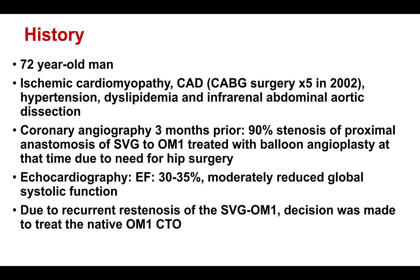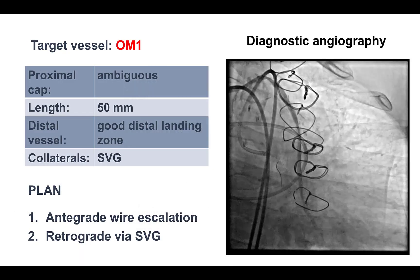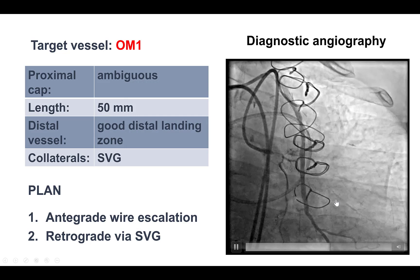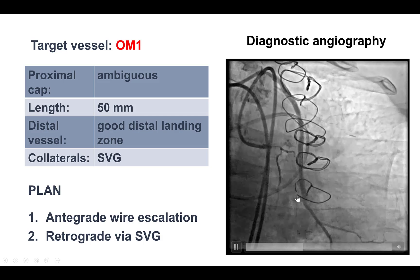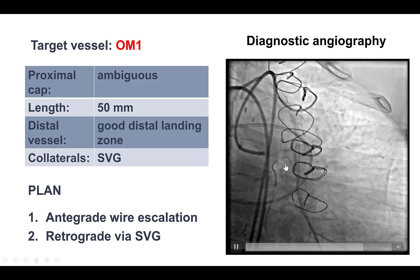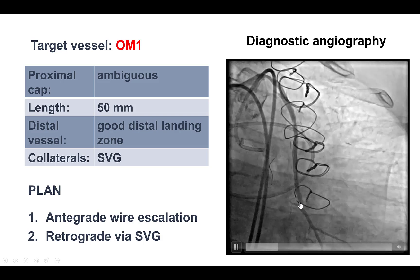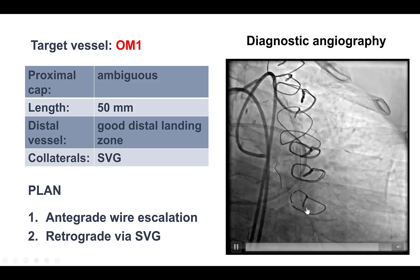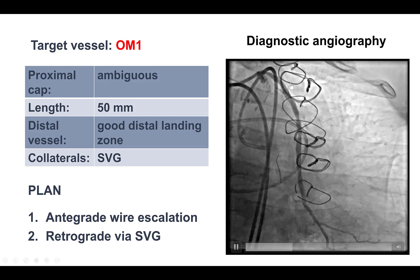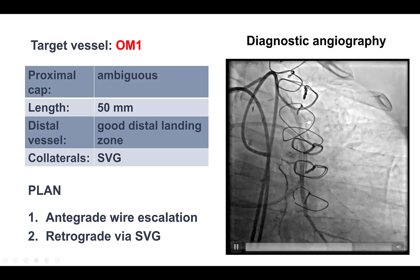The patient was an older gentleman with previous coronary artery bypass graft surgery who had recurrent failure of a saphenous vein graft to the obtuse marginal branch, and he was sent for re-canalizing the native obtuse marginal CTO. This is the dual injection, and this is the saphenous vein graft that kept on having restenosis in the proximal segment. The native vessel, the obtuse marginal, is occluded proximally with an ambiguous proximal cap. The length is long, about 50 millimeters. The distal vessel is of good quality, especially distal to the vein graft touchdown, and there is retrograde access to the vessel through the patent saphenous vein graft.